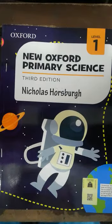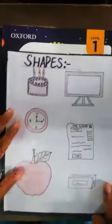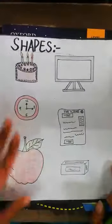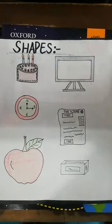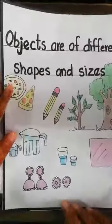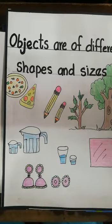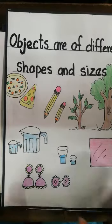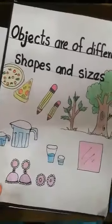In the first picture you can see there are different objects and they are different from each other in their shapes. In the next picture the objects are different from each other in their sizes. Further, we discussed about materials — we have two types of materials.